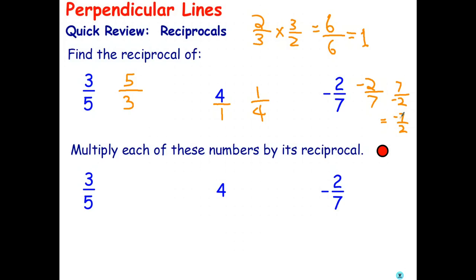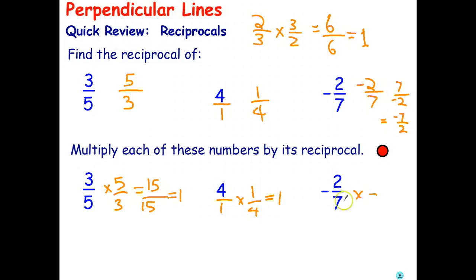As I pointed out up here, if you multiply a number times its reciprocal, in every case you get one. I'll leave the negative sign out the front — that'll save having to worry about moving it around. That makes a lot more sense. Negative times a negative is a positive, two times seven is fourteen, and even if the fraction is negative you still get one when you multiply a number times its reciprocal.